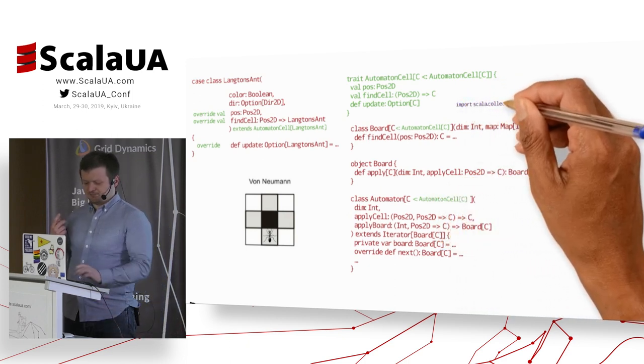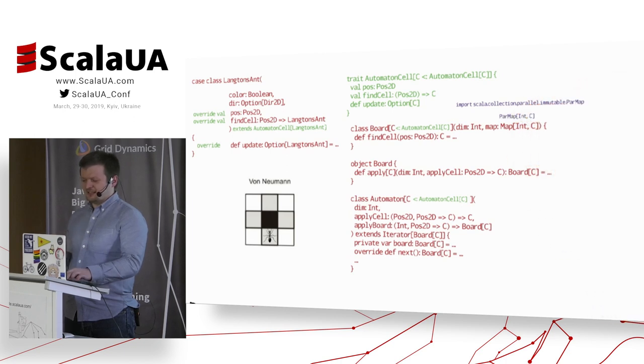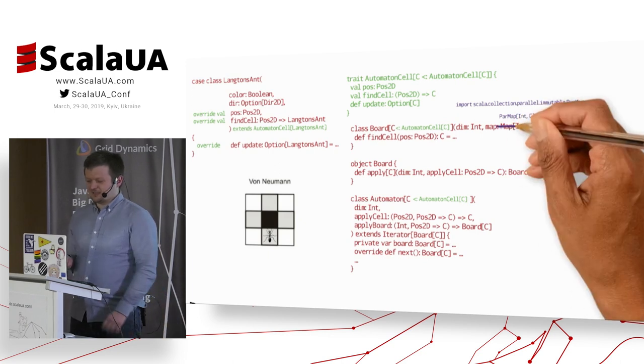And one more thing, because this is the first time in my whole career as a Scala developer that the par map, immutable parallel map, turned out to be a huge boost to the speed of the whole product. Because cells are local and they can be easily distributed. So using par map instead of map gave me like 30% faster execution.